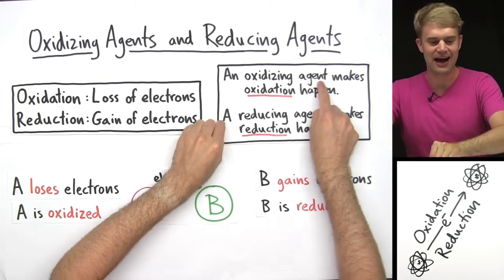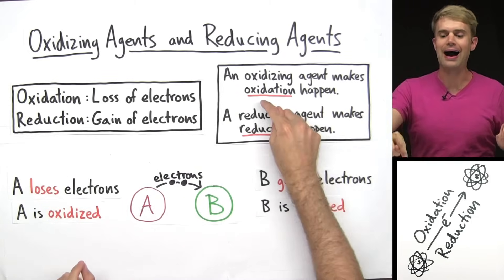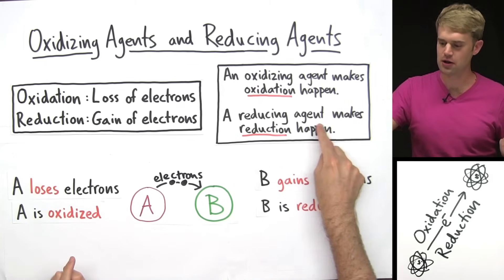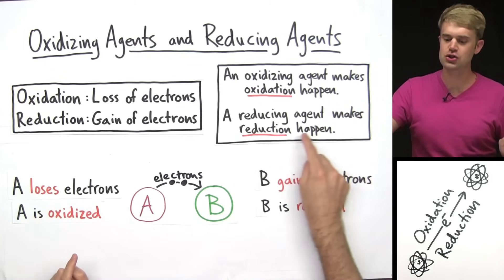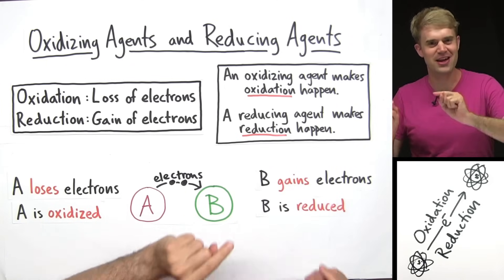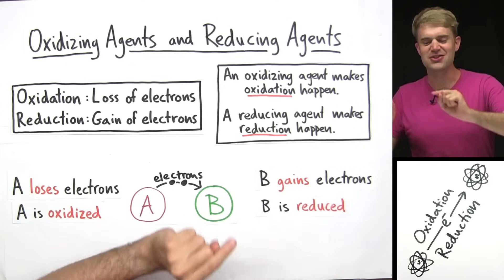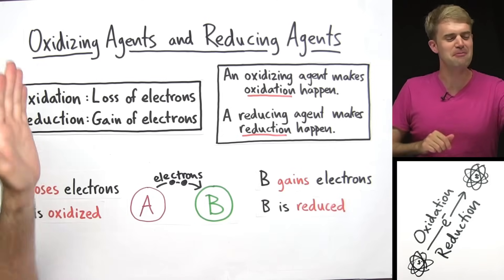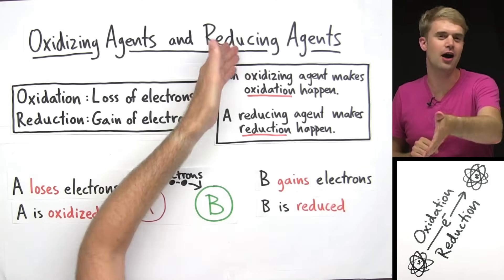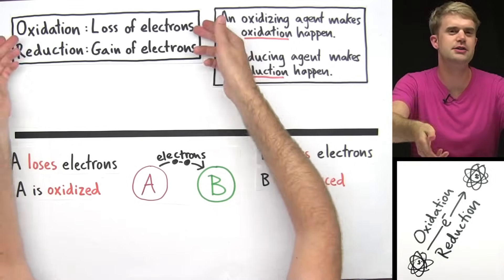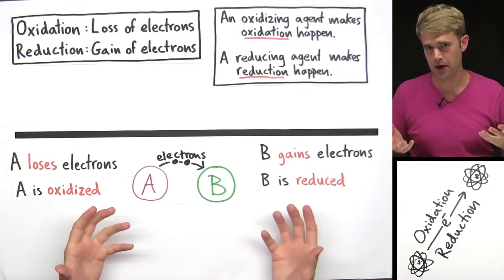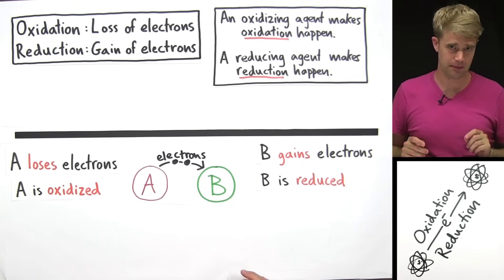And that's exactly what oxidizing and reducing agents do — they make stuff happen. An oxidizing agent makes oxidation happen, and a reducing agent makes reduction happen. So let's talk about the things that something would have to do to make oxidation happen, to make reduction happen.